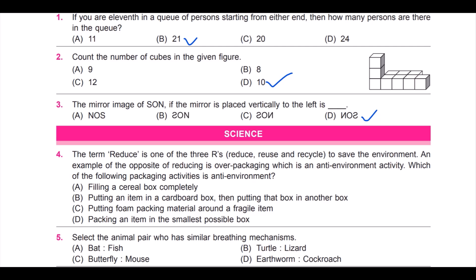And D, packing an item in the smallest possible box. What do you think is the anti-environment activity from this? It is B: putting an item in the cardboard box and then putting that cardboard box again in another box.